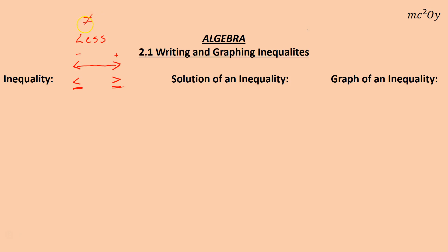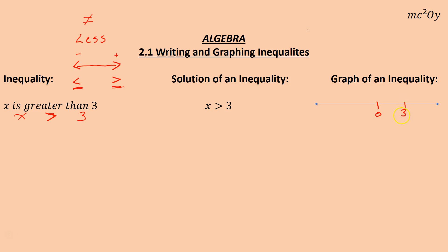Some things to remember: if you have the statement x is greater than 3, we end up with this inequality. The graph of that inequality — if you have a number line, I like to tell students to just put two numbers on there: 0 and then the number. If your actual value is 0, pick a different number. So here we put 0 and 3. The inequality symbols that do not have the equal to piece — to show that value will not be a solution, we use an open circle.